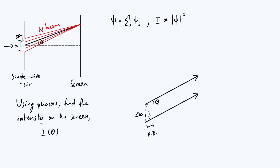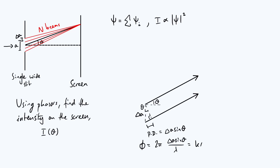I've added the angle theta next to one of the beams. If that's theta, then the angle I marked is 90 degrees minus theta, so the angle at the top of the triangle is just theta. The path difference is therefore delta_a sine theta. To convert a path difference into a phase difference phi, we multiply 2pi by the fraction of a cycle: phi equals 2pi times delta_a sine theta divided by lambda. Since the wave vector k is defined as 2pi over lambda, we can write this neatly as k delta_a sine theta. That phase difference phi is the same between any two adjacent beams since they are evenly spaced.